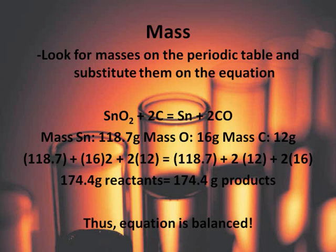We look for their masses and we get that tin has a mass of 118.7 grams, carbon has a mass of 12 grams, and oxygen has a mass of 16 grams.